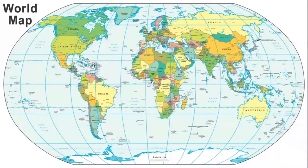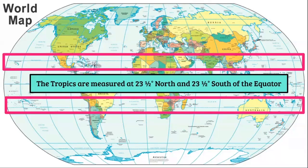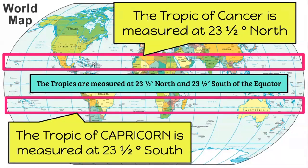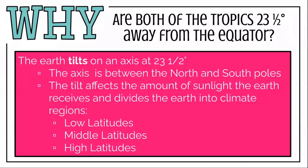Instead of time zones with longitude, let's transition to climate zones with lines of latitude. The tropics are measured at 23 and a half degrees north and 23 and a half degrees south — always measured against the equator. The Tropic of Cancer is at 23.5 degrees north, and the Tropic of Capricorn is at 23.5 degrees south. Why 23.5 degrees? Because the Earth tilts on its axis at 23 and a half degrees.